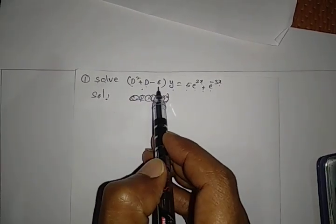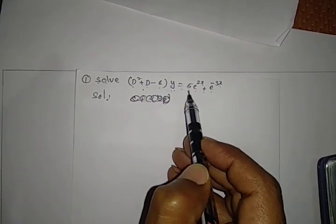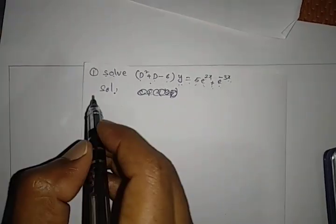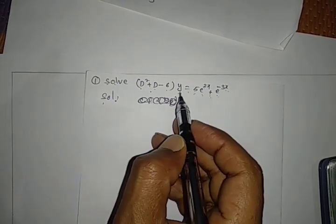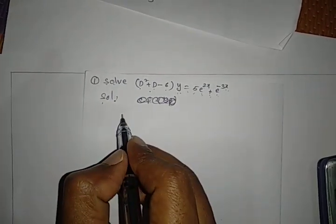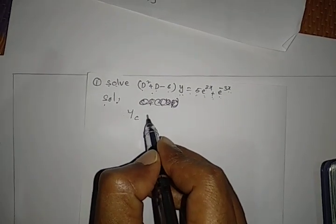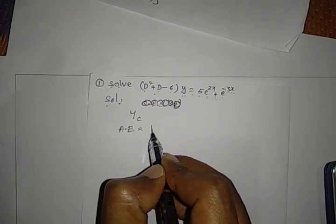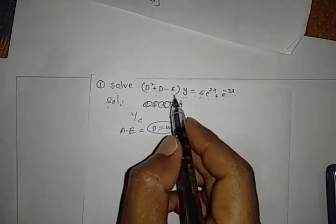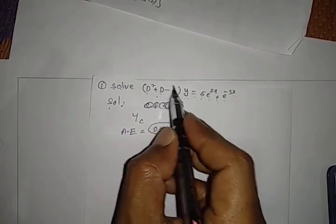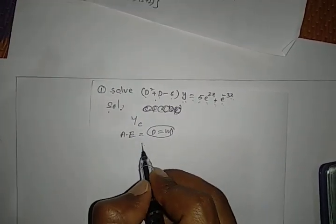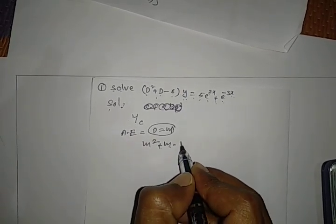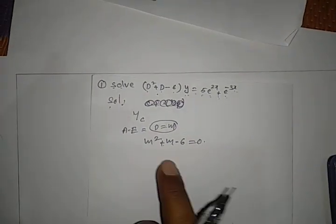The given equation is (D² + D - 6)y = 5e^(2x) + e^(-3x). First, we need to find the complementary function yc. For that, find the auxiliary equation by substituting D = m in the given equation. The LHS becomes m² + m - 6 = 0.